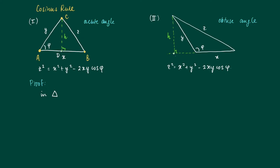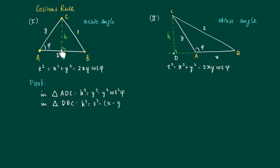We're going to prove the acute angle case. Look at triangle ABC and triangle ADC. We have H as the line segment perpendicular to AB, so we know that H squared plus Y squared minus Y squared cosine squared phi equals Z squared plus Y squared cosine squared phi. Looking at triangle DBC, Z squared equals DB squared plus H squared, so H squared equals Z squared minus (X minus Y cosine phi) squared.